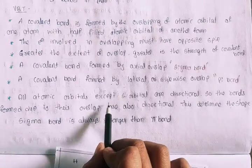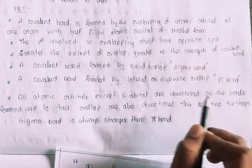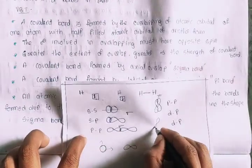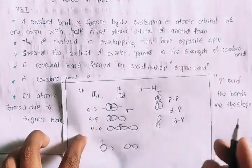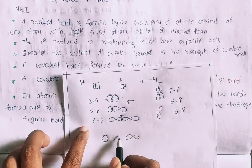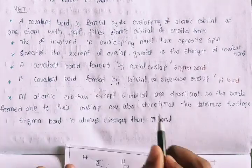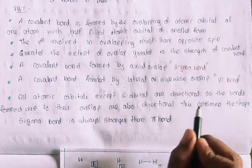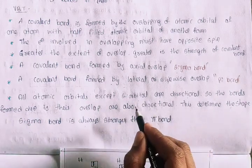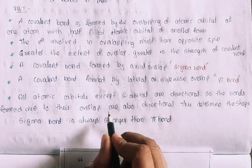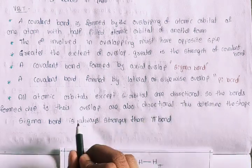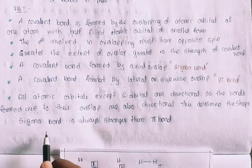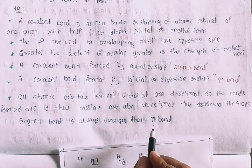All atomic orbitals except the S-orbital are directional. You can see the direction of P and D orbitals. But in the case of S-orbital, the direction is not visible — you can see the shape but not a specific direction. In the case of P and D, you can see both direction and shape. Sigma bond is always stronger than pi bond.